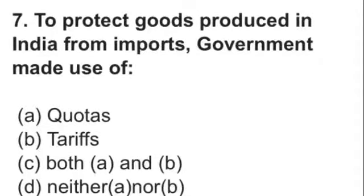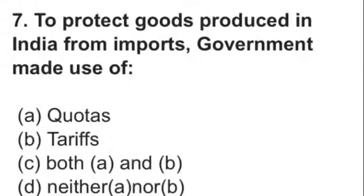Question number 7: To protect goods produced in India from imports, the government made use of — अब देखो, India को जो हमारी domestic made goods हैं उसको foreign competition ना मिले, तो उनको protect करने के लिए imports पे government ने क्या use किया? Options हैं: quotas, tariffs, both A and B, या neither A nor B. Quotas एक maximum limit होती है that up to this quantum only you can import. Tariffs are kind of taxes on imports. So आप judge करें answer को — यह सब हमने already videos में cover किया हुआ है, तो आप videos भी देख सकते हैं again if you are not clear.